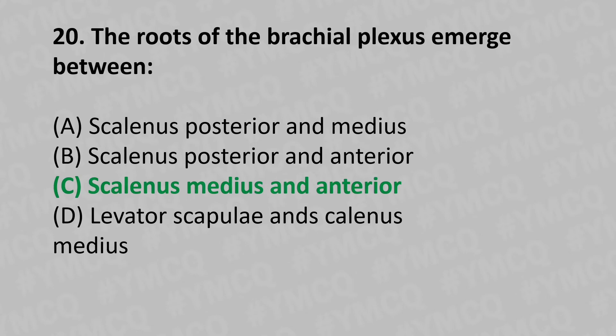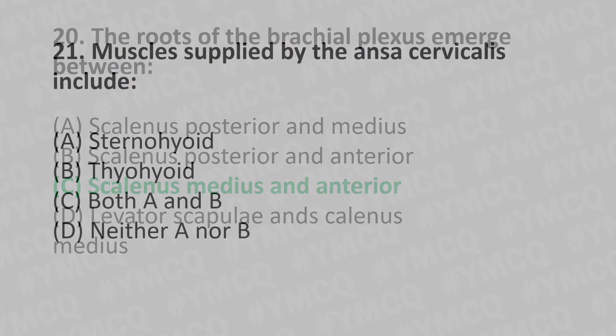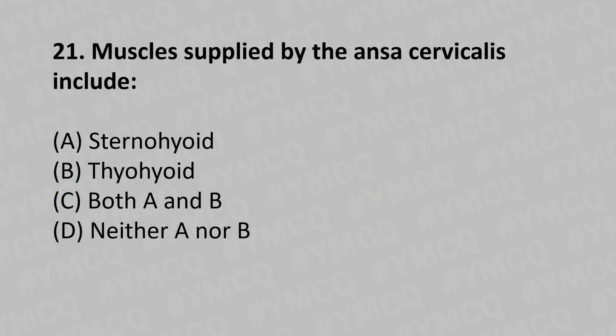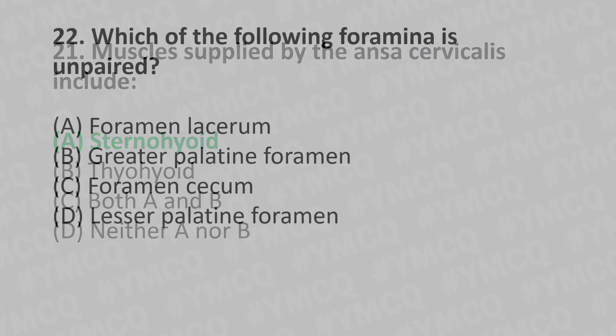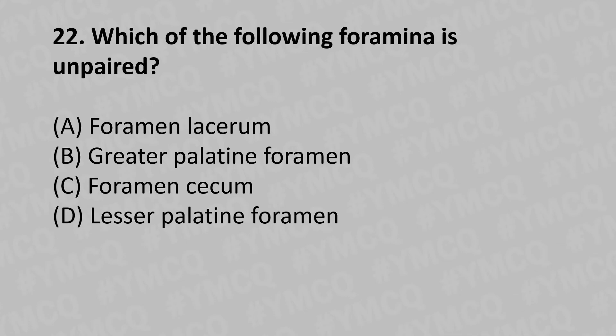Moving to our twenty-first question: muscles supplied by ansa cervicalis include which of the following? Option A: sternohyoid. Option B: thyrohyoid. Option C: both A and B. Option D: neither A nor B. The answer is Option A: sternohyoid. Moving to our twenty-second question: which of the following foramina is unpaired?